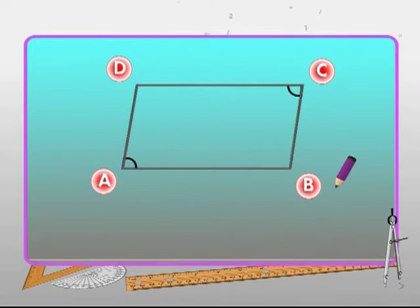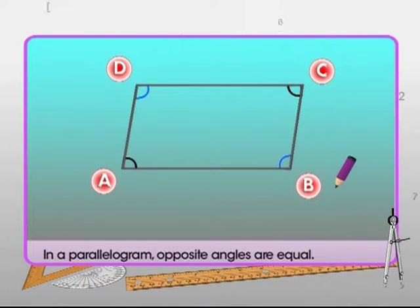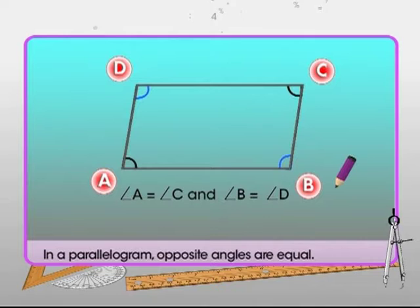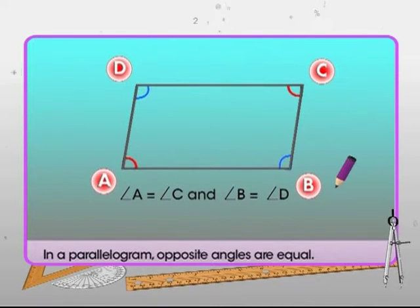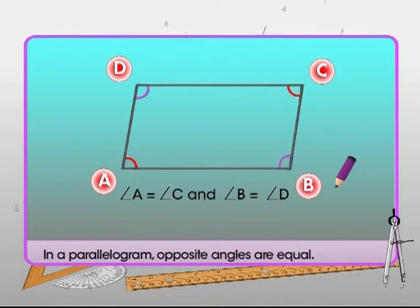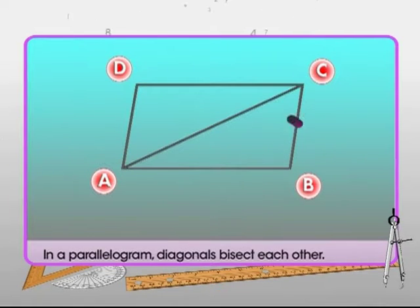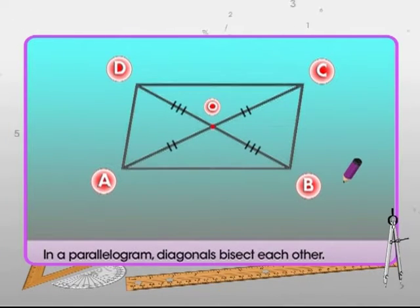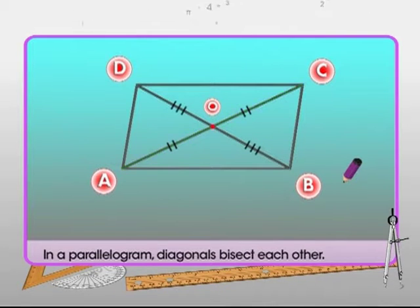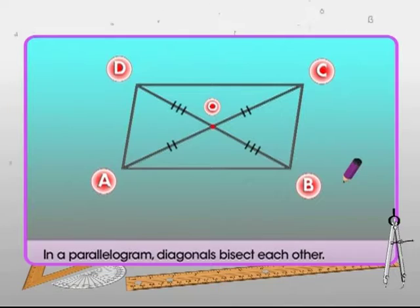In a parallelogram, opposite angles are equal. In the given figure, angle A is equal to angle C, and angle B is equal to angle D. Also, in a parallelogram, the diagonals bisect each other — in the given figure, diagonals AC and BD bisect each other.